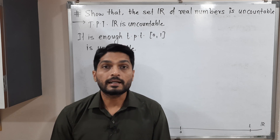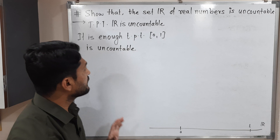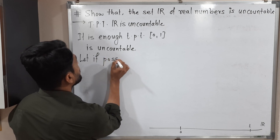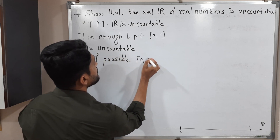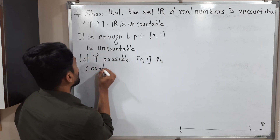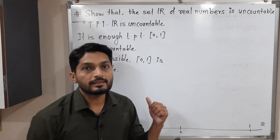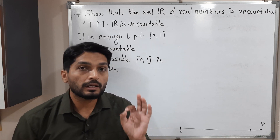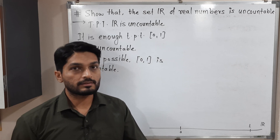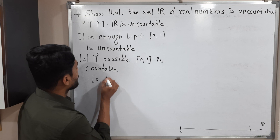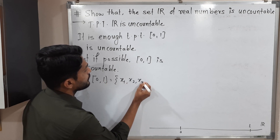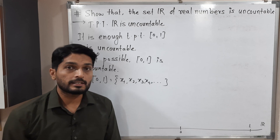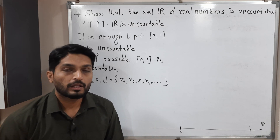In mathematics, when we want to prove something, we assume exactly the opposite. So here I will assume that [0,1] is countable. Let, if possible, the closed interval [0,1] be countable. Countable means we can count its elements — first, second, third — giving proper numbering x1, x2, x3, and so on. Therefore, we can write them as x1, x2, x3, x4, and so on — infinitely many elements listed in order.